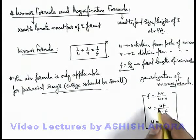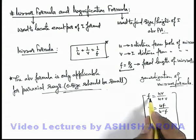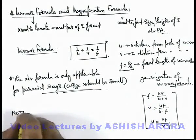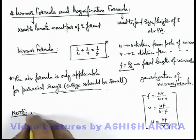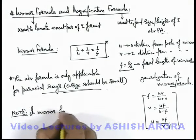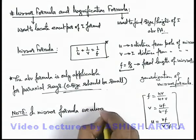That here u, v and f must be taken with the proper signs. I can write down a note: in next section we'll discuss about the sign convention used also. In mirror formula, we always substitute values of u, v and f.